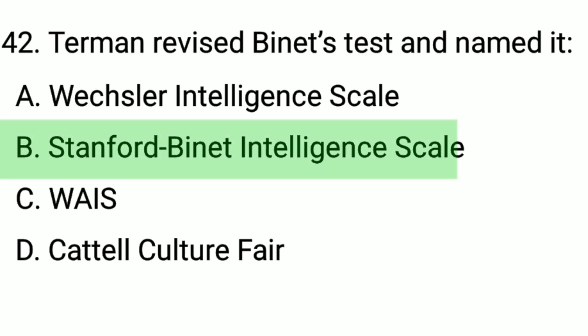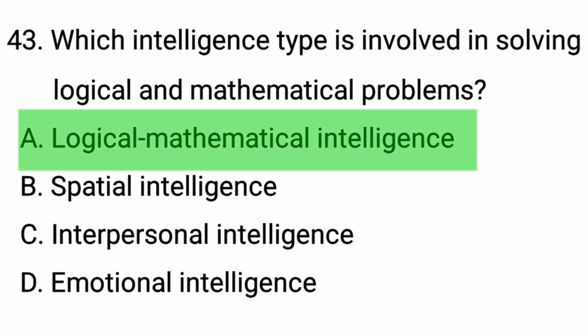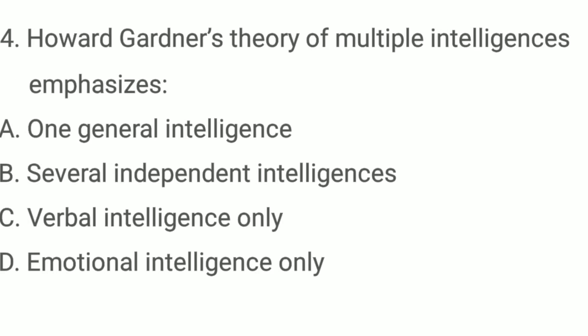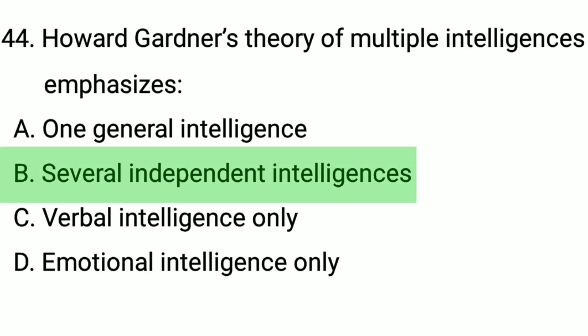Q42 answer: The correct option is option B: Stanford-Binet Intelligence Scale. Q43. Which intelligence type is involved in solving logical and mathematical problems? The correct option is option A: logical-mathematical intelligence. Q44. Gardner's theory of multiple intelligences emphasizes... The correct option is option B: several independent intelligences.